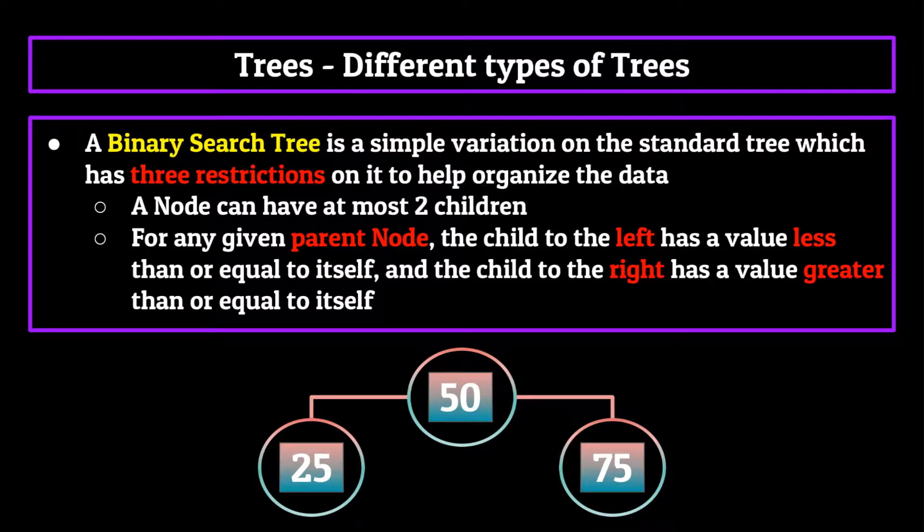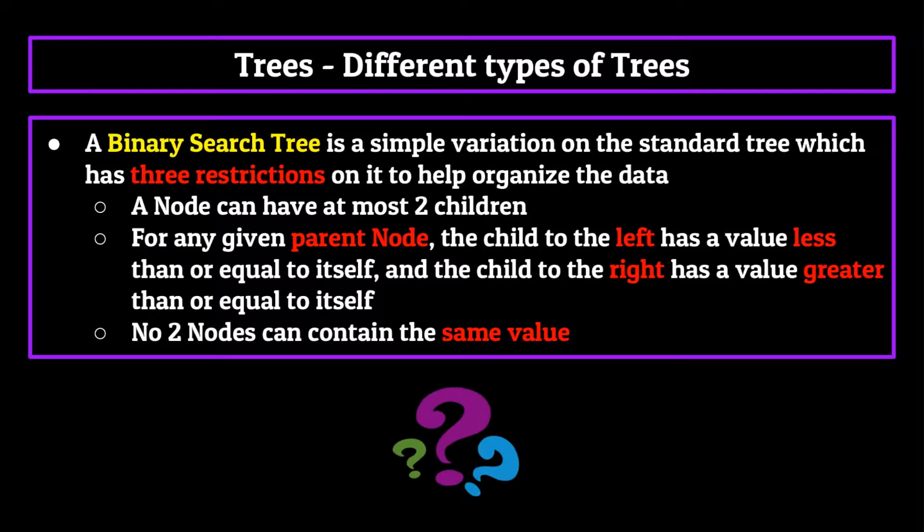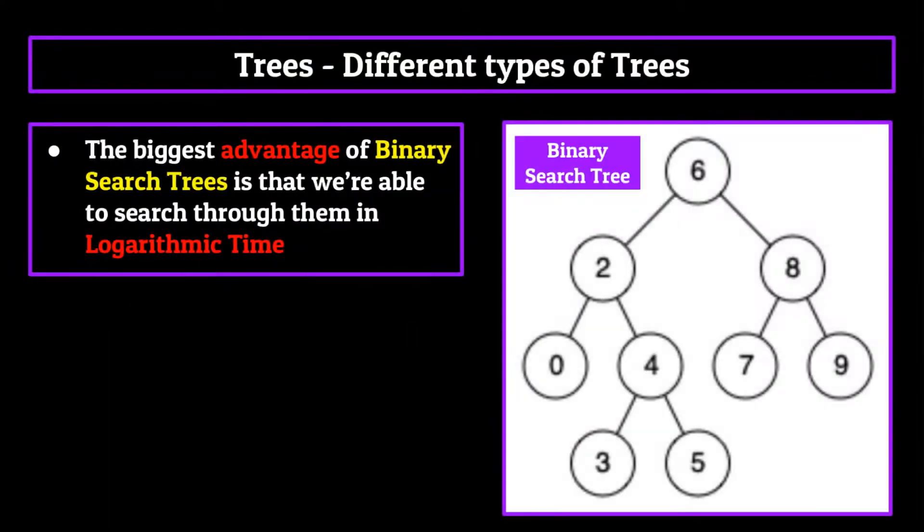This might seem weird, but it comes with certain advantages and disadvantages over using normal trees, which we'll get to in a bit. The final restriction put on binary search trees is that no two nodes can contain the same value. And this is just to prevent weird things from happening with the structure of the tree. Now how does imposing these restrictions on a tree actually help us?